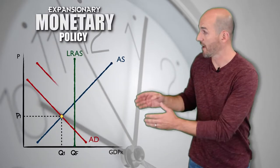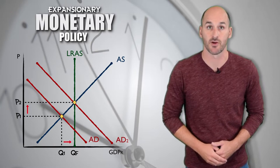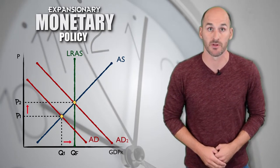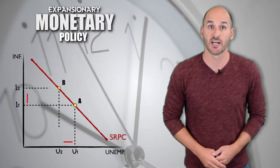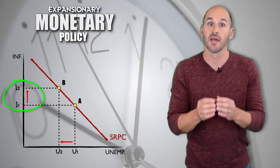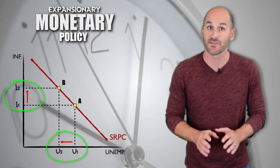Expansionary Monetary Policy can be visualized by a rightward shift of the aggregate demand curve, which leads to an increase in both price level and real GDP output. It can also be visualized by a leftward movement along the short-run Phillips curve, which represents an increase in the inflation rate and a decrease in the unemployment rate at the same time.